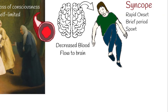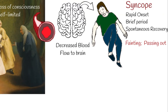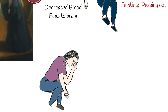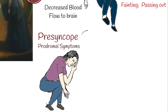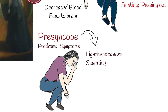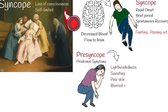Syncope is also known as fainting or passing out. Sometimes prodromal symptoms occur before loss of consciousness — this condition is called presyncope. Presyncope symptoms include lightheadedness, sweating, pale skin, blurred vision, nausea, vomiting, or feeling worn.